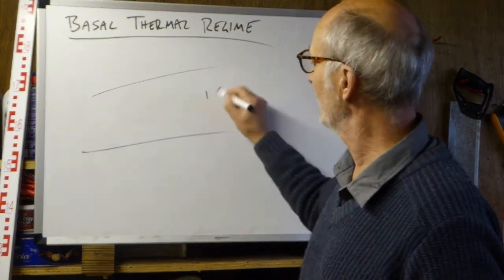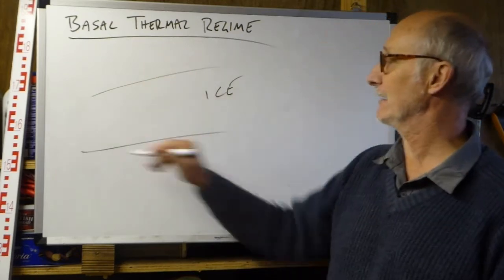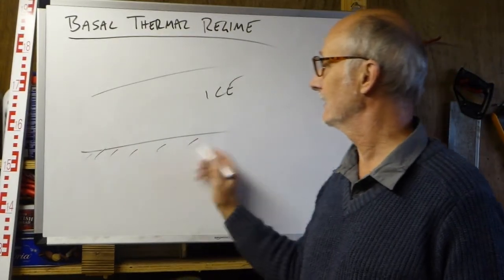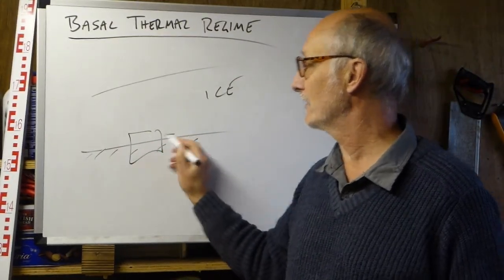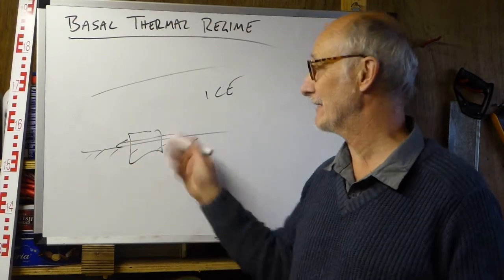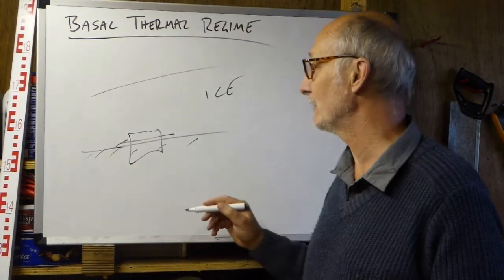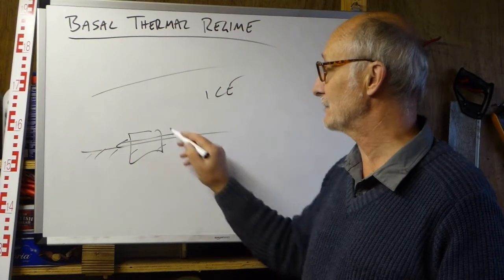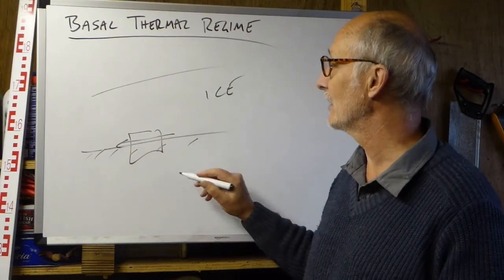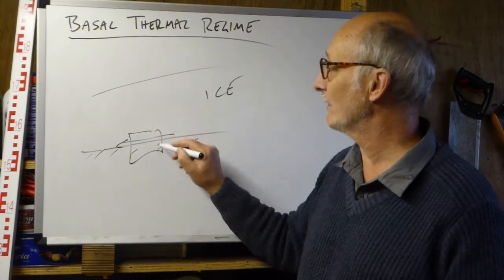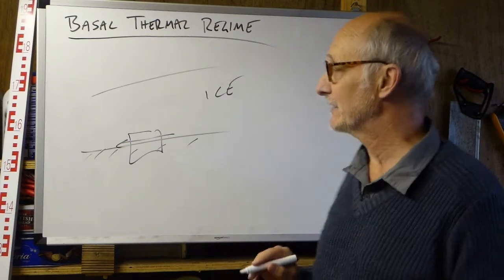We're thinking about this situation: we have the glacier, ice surface, glacier bed, and in this area where we're talking about glacier dynamics, the impact of the glacier on the substrate, generating geomorphic features, and geomorphic processes operating in that environment — what we're talking about is the temperature regime in that location.